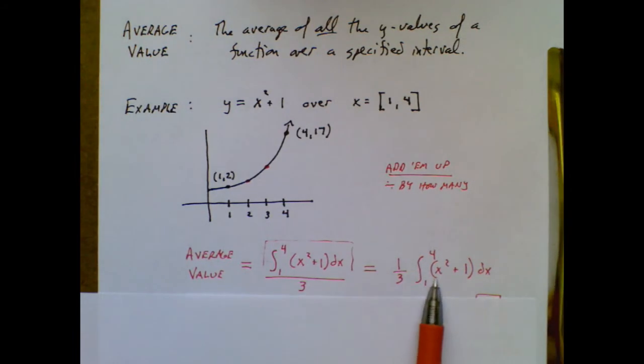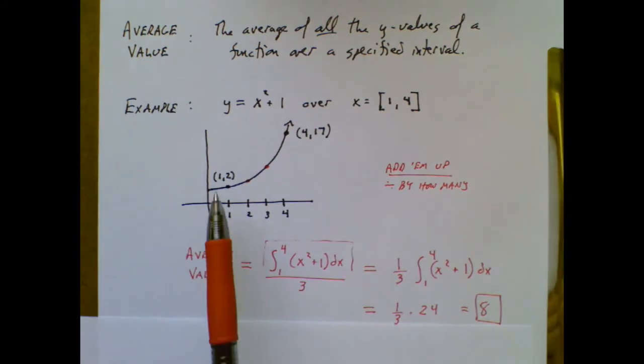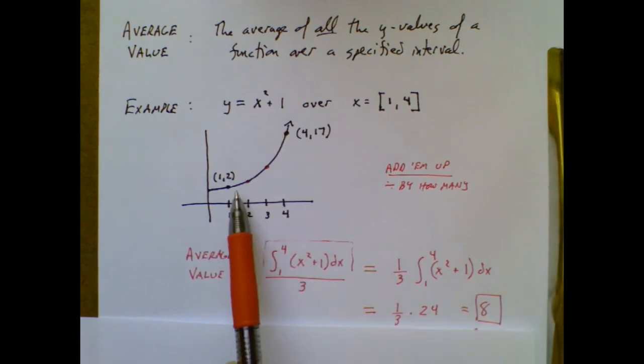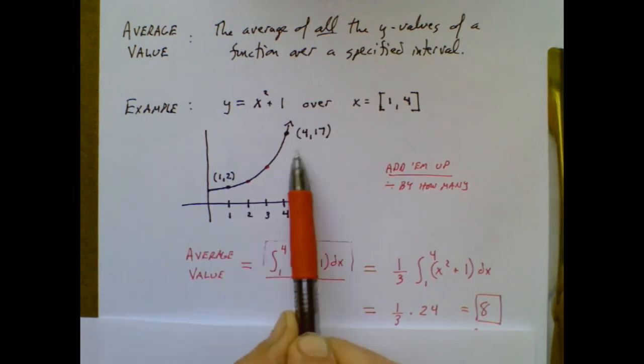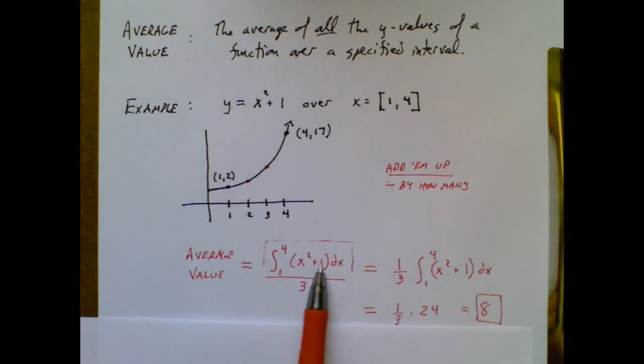But then once you add up all the y-values and divide by the interval length, you have your average y-value of eight. Which makes intuitive sense. If our lowest y-value is two and our highest y-value was 17, even though this isn't drawn to scale, you can kind of estimate that if I averaged all those, it would fall somewhere close to the middle between two and 17, but not exactly the middle. So eight is a pretty reasonable answer. So average value can be a really, really easy concept. Almost always it would be then applied to a real world scenario. But you just know that you add them up and divide by how many? The add them up will be an integral operation. The divide by how many is the distance along the x-axis represented by your limits of integration.